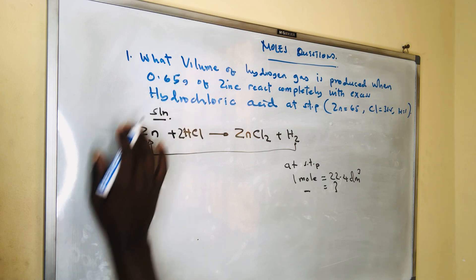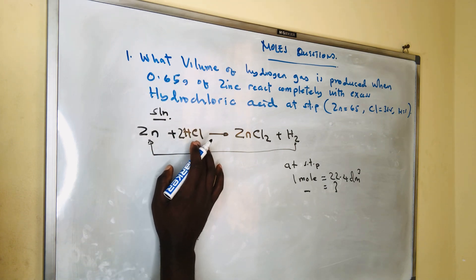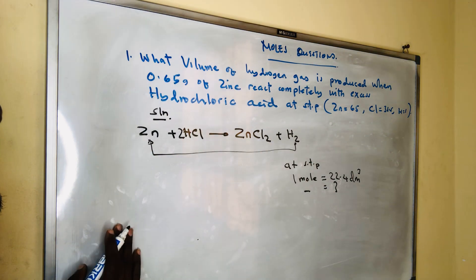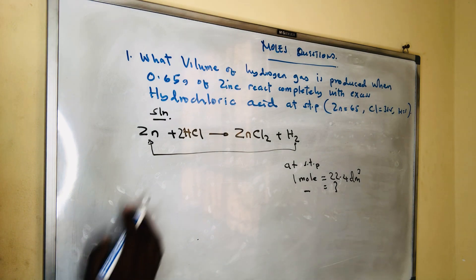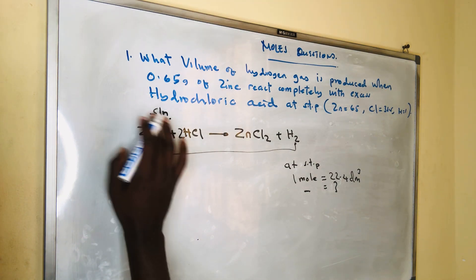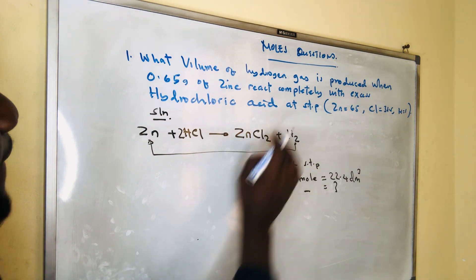We will apply zinc because we were given the mass of zinc, not the mass of HCl. Here we have a relationship between zinc and hydrogen.